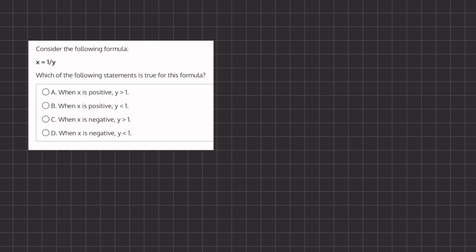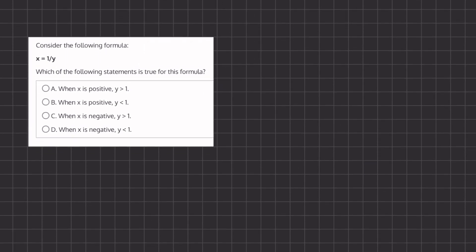Let's take a look at option A. Option A states when x is positive, y is greater than 1. Now, let's pick a positive value for x, let's say x equals 2.